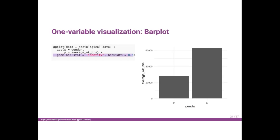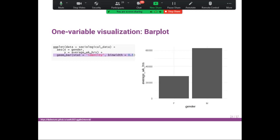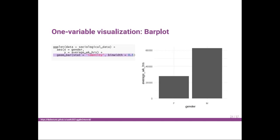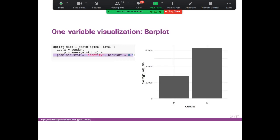Like the box plot, we start by plotting a basic bar plot. I have the command ggplot(data = sociological_data) with aes(x = gender, y = average_working_hour). Then I add geom_bar() and set stat = 'identity' and width = 0.5. Here is your first bar plot.